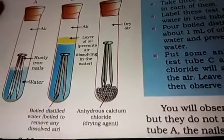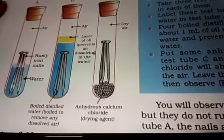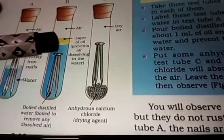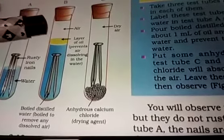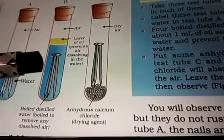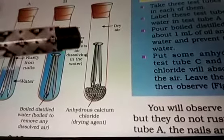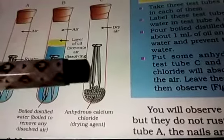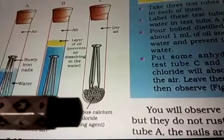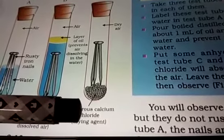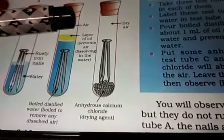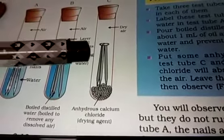In test tube B, there is a layer of oil — shown in yellow — which prevents air and water contact, so the nails will not get rusted. In test tube C, anhydrous calcium chloride absorbs all the air inside the test tube, so without air, the nails will not rust either.